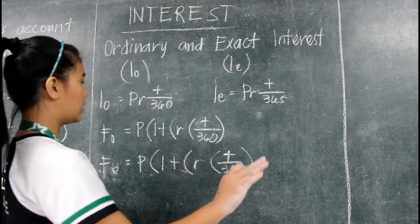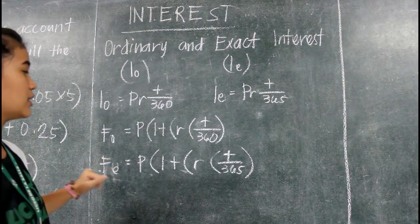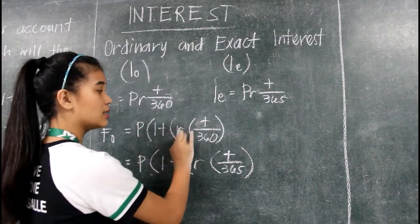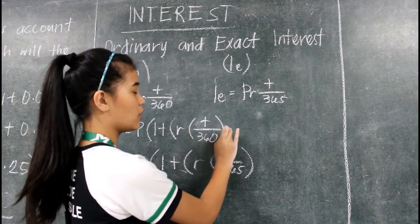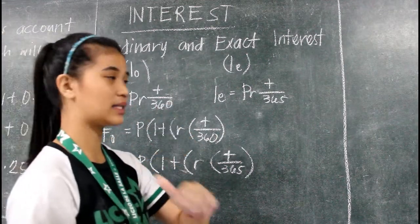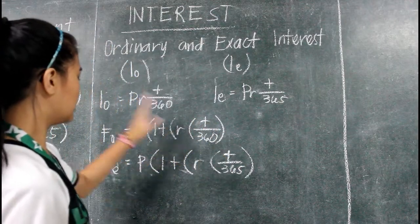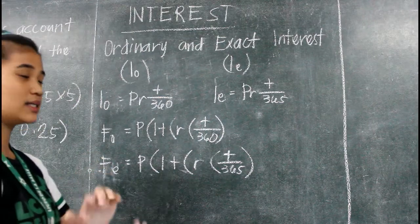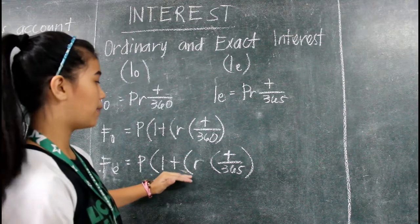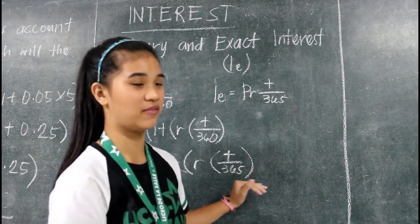So for future value, the future value of ordinary interest is P times 1 plus R times T over 360. It is almost the same as simple interest — it's just that the term of the loan already has a denominator. For exact interest, the future value is P times 1 plus R times T over 365.